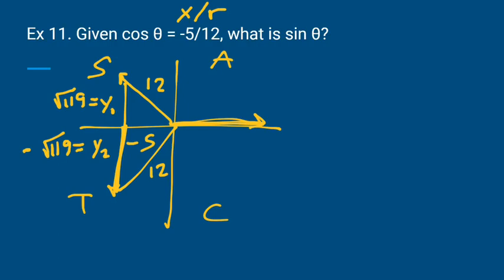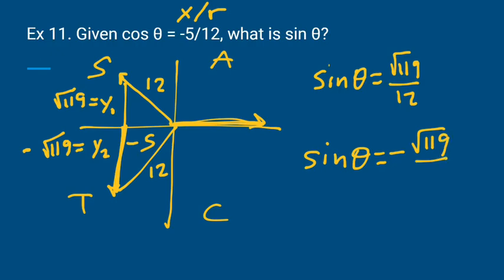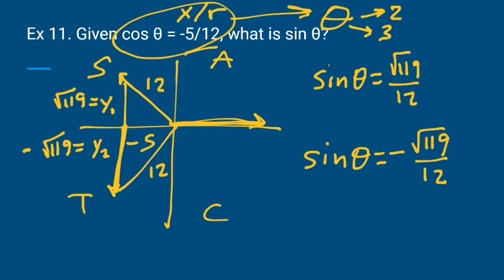it's going to be negative √119. So the sine of theta could be √119 over 12, or the sine of theta could be negative √119 over 12. We don't know because we don't have enough information, because if it tells us the cosine of theta is negative, theta could be in quadrant 2 or 3, because that's where cosine is negative.